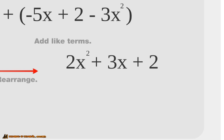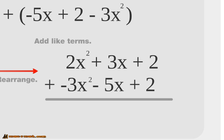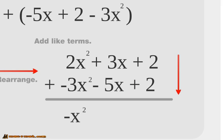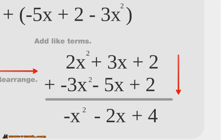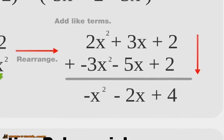Now that they're written in standard form, we add the like terms. We've got 2x squared plus 3x plus 2, and negative 3x squared minus 5x plus 2. Now we just add down, just like we would with plain numbers. We get 2x squared minus 3x squared equals negative x squared, then plus 3x minus 5x equals negative 2x, and then plus 2 plus 2 equals plus 4. So our new combined equation is negative x squared minus 2x plus 4.